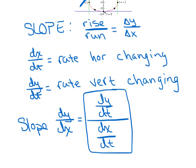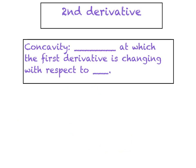So dy/dt divided by dx/dt is how we measure the slope of a parametric. It's very similar to polar, and once you see an example, it's a piece of cake. Now we want a quick discussion about the second derivative of a parametric function. If we want the first derivative to measure slope, we also want the second derivative to always measure concavity — regardless of whether we're in rectangular, polar, or parametric mode.